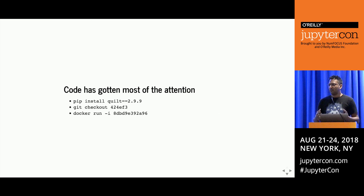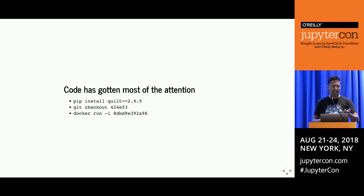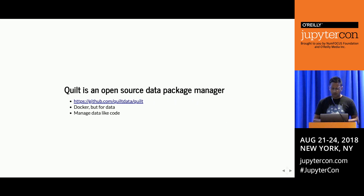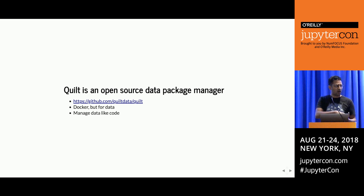Up until now, code has gotten most of the attention. You can version-pin to a particular module on PyPI, checkout a particular state of a repository, or docker run a particular container. But on the data side of things, it's still like the Wild West. As our colleague Pete Worden from Google said, 'This feels like we're coding without source control.' The question now is: what can we do to bring code-style management to data? Using metaphors like Docker, PIP, and GitHub applied to data gets some interesting results—and that's what we're going to share.